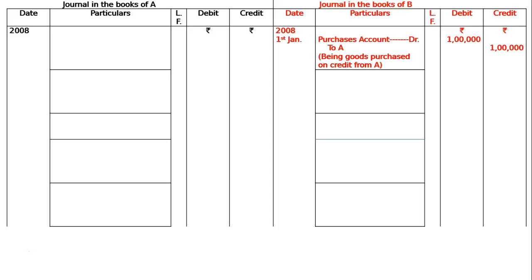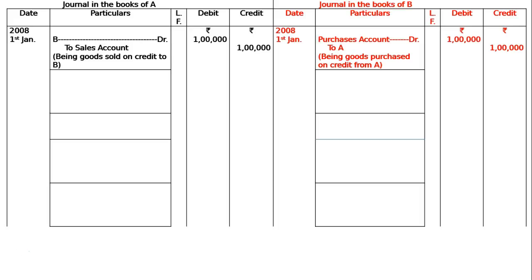In the books of A, B is debited to sales account on January 1, being goods sold on credit to B, same Rs. 1 lakh. For this, A received cash and drew new bills — 1st Rs. 45,000, 2nd Rs. 30,000 for 2 months each.